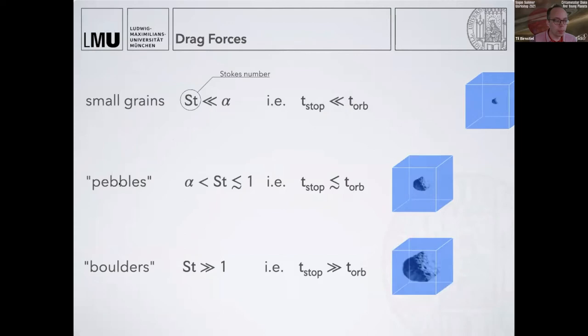They typically have a Stokes number still smaller than one, which means their stopping time starts to approach the orbital timescale. They don't perfectly couple to the gas—they are somewhat partially decoupled. If you move this gas around, the dust particle still feels it but isn't following 100 percent.